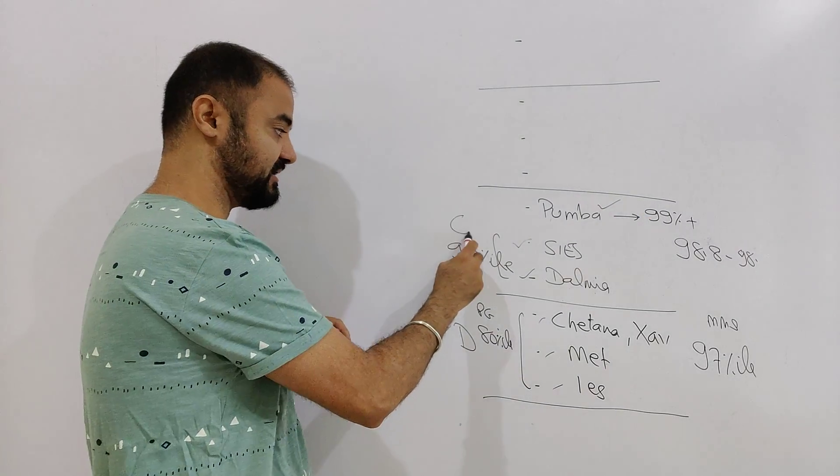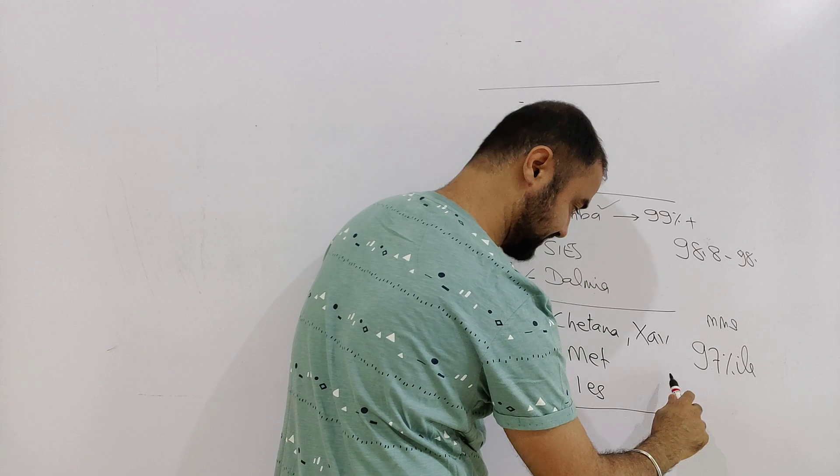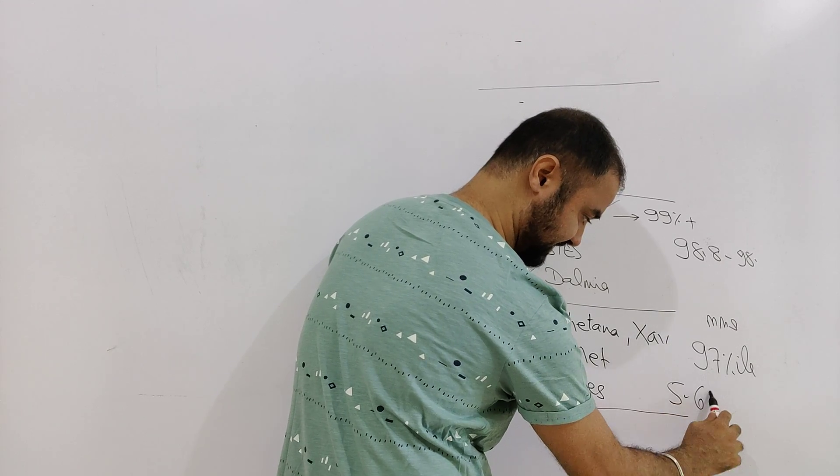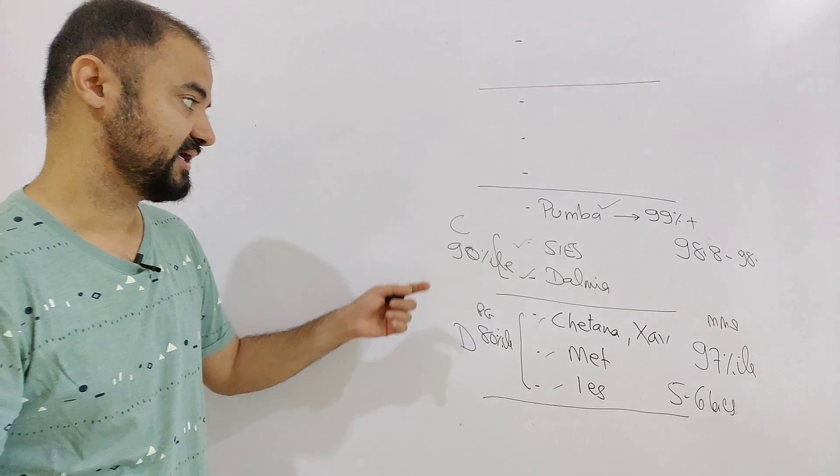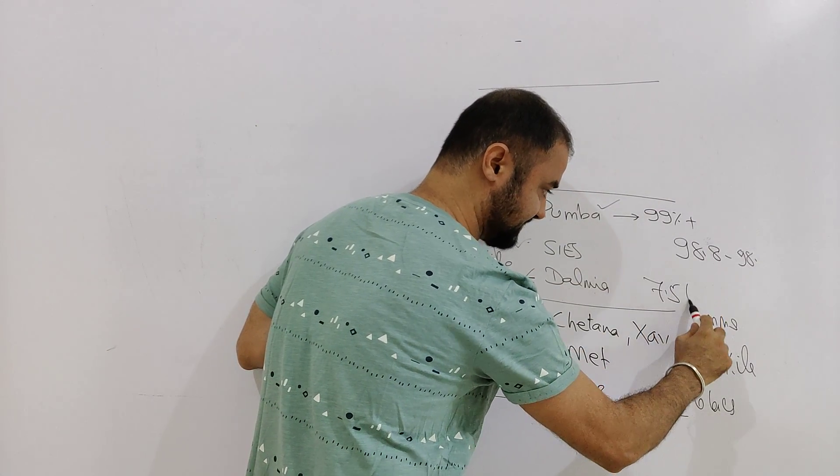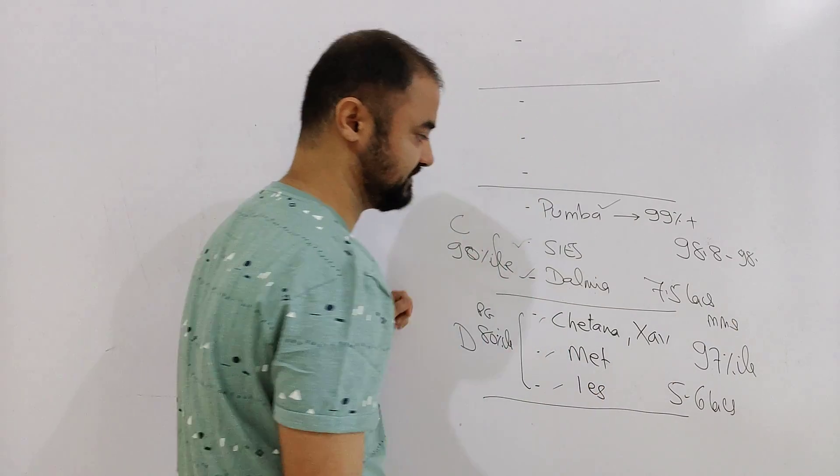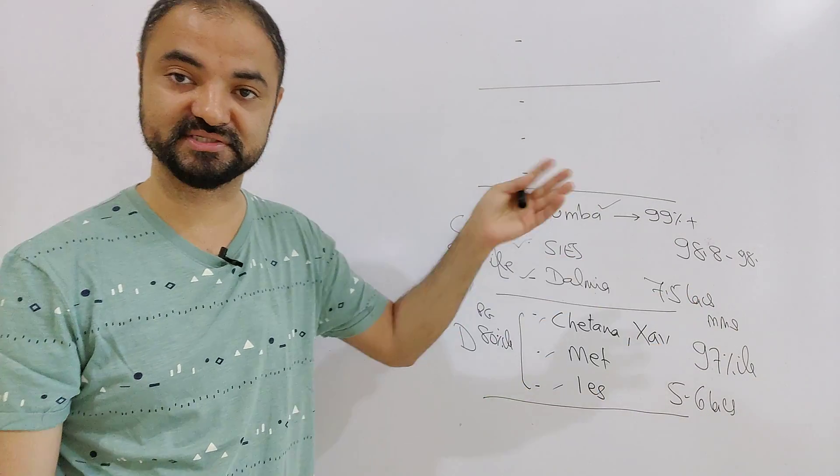Moving to the Band C from my point of view. Average salary of Chetna, MET, IES, you can check on their website as well. Will be around 5 to 6 lakhs. Yeah, that's going to be a range if you're getting admission to these colleges. SIS, Dalmia, Pumba. Now, Dalmia, SIS, average salary is touching around 7.5 lakhs. Yeah, this is salary this year. By the time you will be joining and passing out, obviously this number will increase.